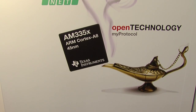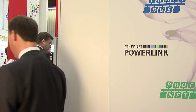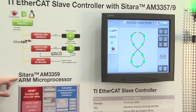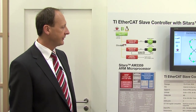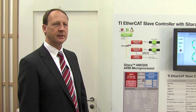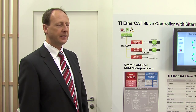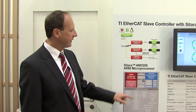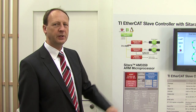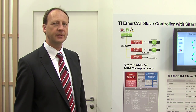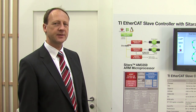Now let's have a look at the AM335X multi-protocol industrial communication device. Here is the Sitara AM3359 microprocessor with the integrated industrial communication subsystem, which has two PRUs — programmable real-time units — running at 200 megahertz.